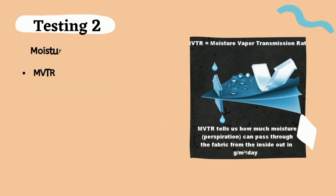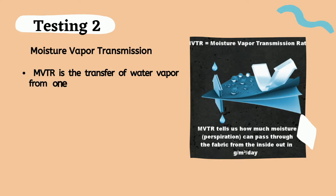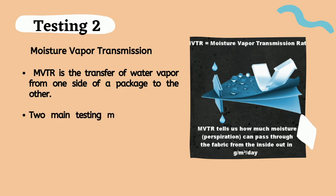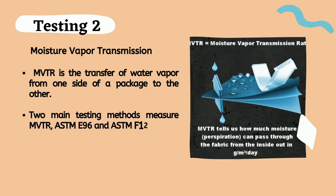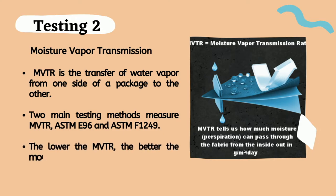Moisture vapor transmission is the transfer of water vapor from one side of a package to the other. The water vapor transmission in a specified time range is measured by the moisture vapor transmission rate, MVTR, also known as the water vapor transmission rate. MVTR is measured by ASTM E96 and ASTM F1249.